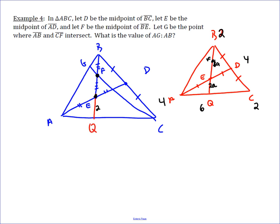And from that we can see that our ratio of BF to FQ is now 5 to 3.